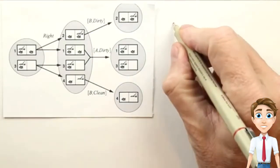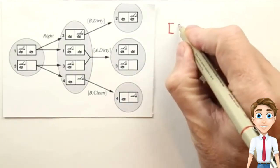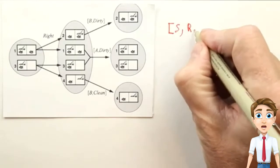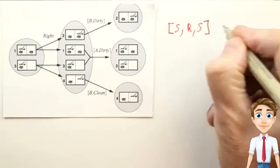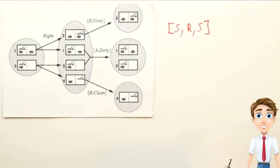In this new notation, instead of writing plans as a linear sequence of, say, suck, move right, and suck, I'm going to write them as a tree structure.